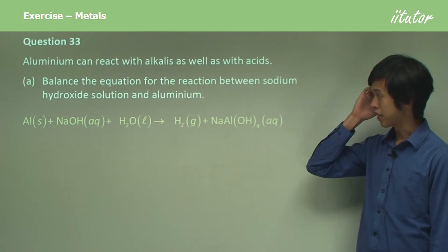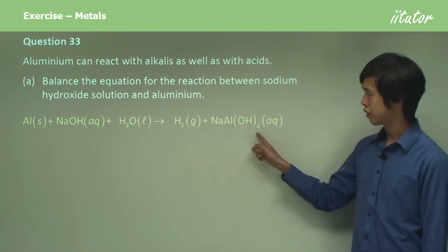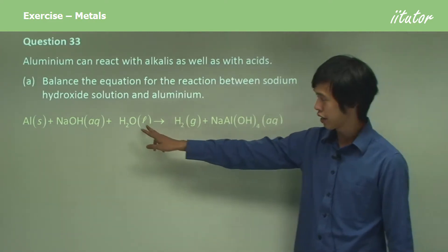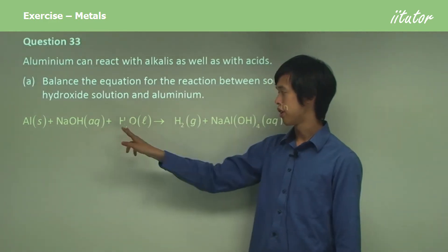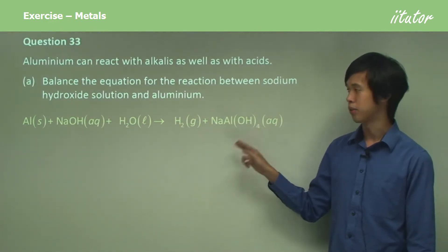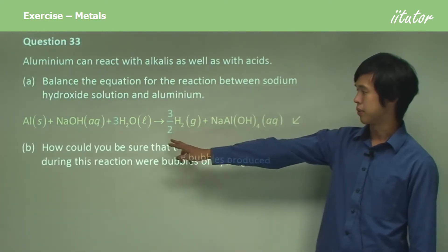First we start by balancing the OH. We've got one OH here and then another OH in here, but we've got four. So we've got OH, OH and 4OH, so we need to multiply this by two.